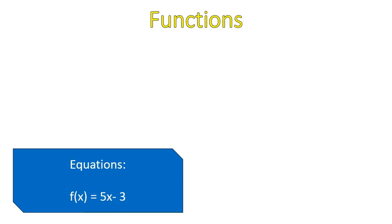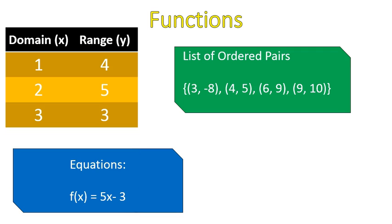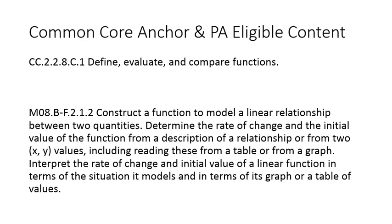So quick review, functions will come in one of four different ways. They will come as an equation. They will come as a list of ordered pairs. They will come as a table with a domain and range or a function x and a function of x or an input and an output. And they will come as graphs. Any of these methods, you should be comfortable with interchanging between them. And being able to do that and change between those is going to be a key part moving forward of dealing with functions. I hope that that lesson was helpful for you. Here's your Common Core anchor and your Pennsylvania-eligible content. Have a great day.